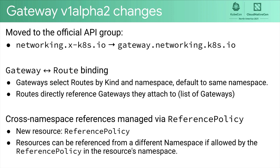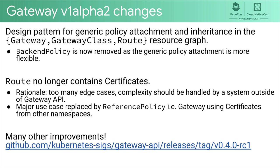The third improvement is a separate resource called reference policy, which governs whether or not a given resource is allowed to be referenced from another namespace. This makes cross-namespace resource sharing safe, and we are seeing other areas of the API — not just within networking — look to this API pattern. We have also come up with a common design pattern for policy attachment and inheritance in the gateway, gateway class, and route resource graph. As a result, the backend policy resource is now removed in favor of the more generic policy attachment schema. Finally, routes no longer contain certificates or TLS information, as working through edge cases showed this is better handled by an API outside the system. There are many other improvements in the release notes, and you can try out the v1alpha2 API with one of the implementations on the linked page.